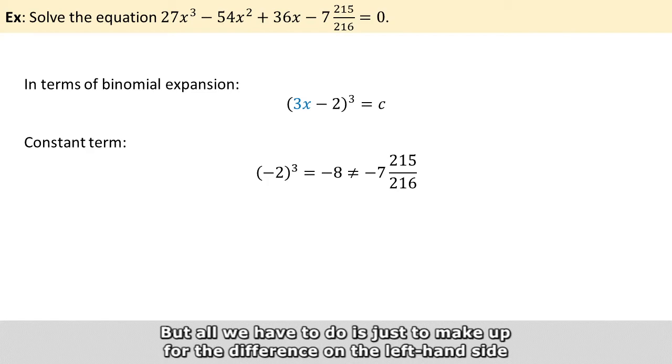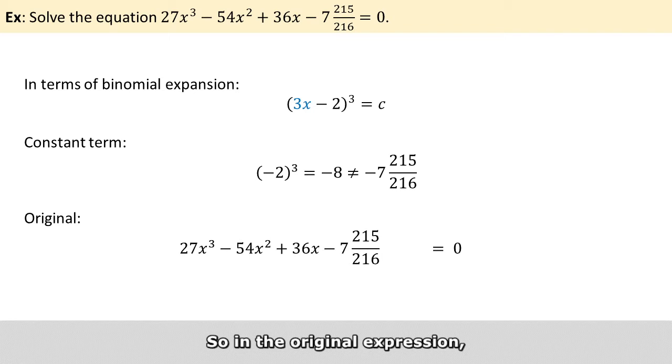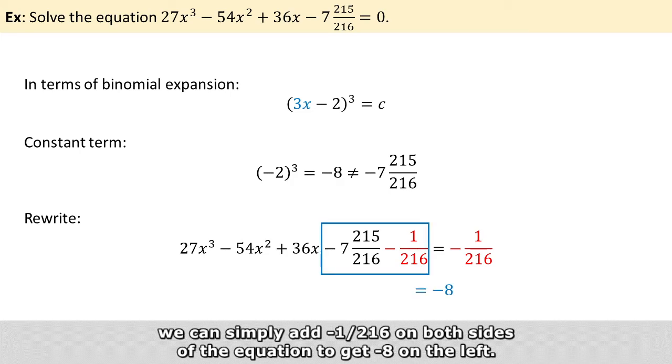But all we have to do is just to make up the difference on the left hand side and then compensate on the right. So in the original expression, we can simply add a minus 1 over 216 on both sides of the equation to get a minus 8 on the left.